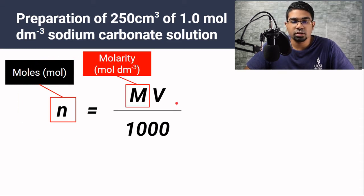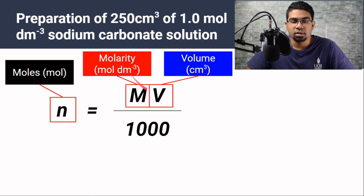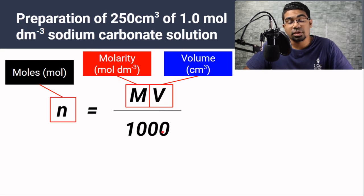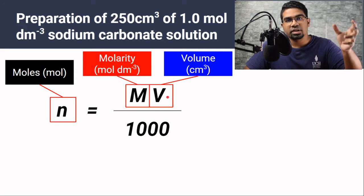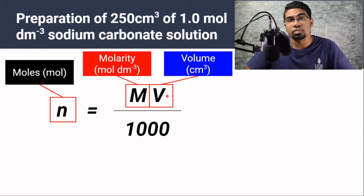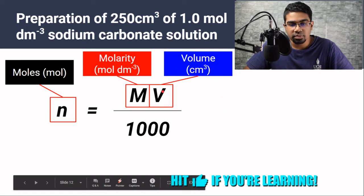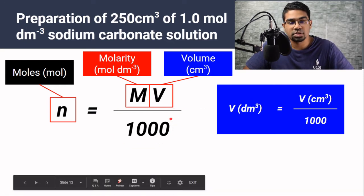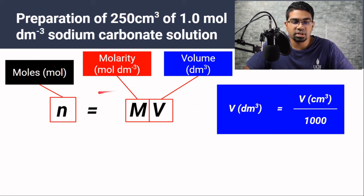In order to find the number of moles, we need the molarity. Molarity is simply the concentration in moles per dm³. V is the volume of the solution we are going to prepare, and this has to be in cm³, divided by 1000 — because volume in cm³ divided by 1000 is the conversion to dm³. All our measuring instruments in the lab are normally graduated in cm³, not dm³, so the conversion is built into the formula. If the volume were already in dm³, the formula would simply be N = MV.